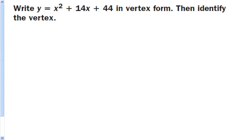Write y equals x squared plus 14x plus 44 in vertex form, then identify the vertex. First thing you need to know is what is vertex form, and that is y equals a times x minus h squared plus k.